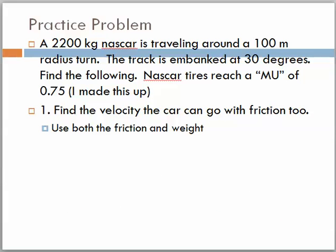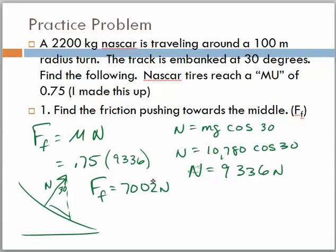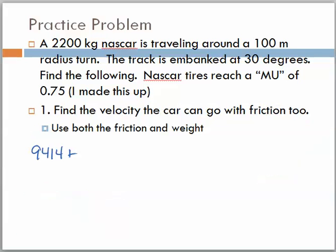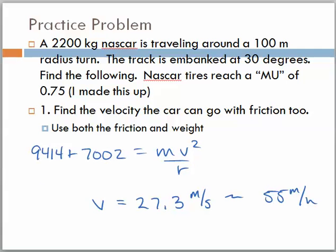Now, find the velocity that the car can go with friction too. So, what that means is, we're going to take the 9414, and we're going to add to it the amount of frictional force, which we turned out to be 7000. The frictional force was right here, 7002. So, we're going to take the amount of, and add these together, and set this equal to mv squared over r. And what we find here is, this car can go approximately about 27.3 meters per second, or about 55 miles per hour.